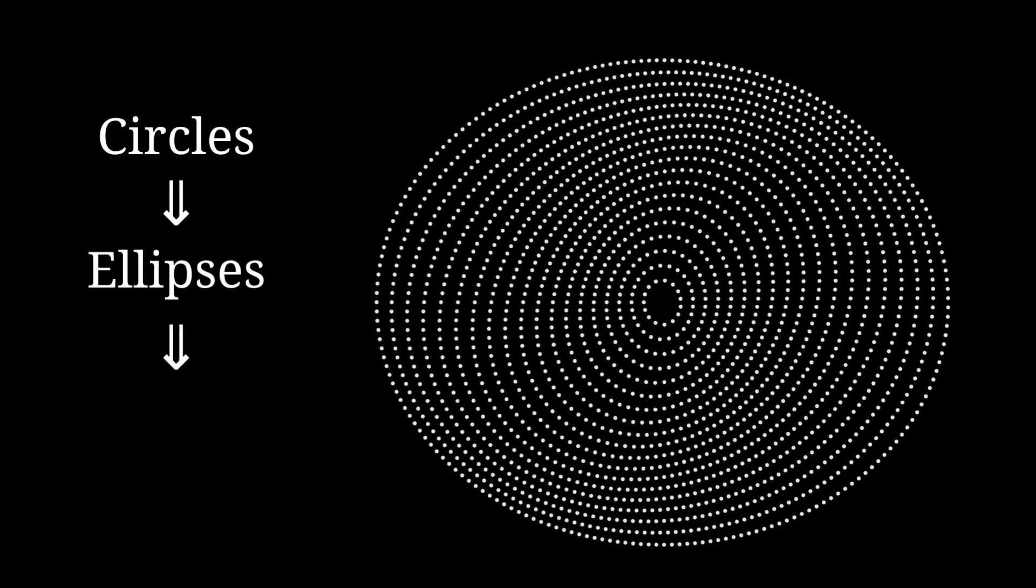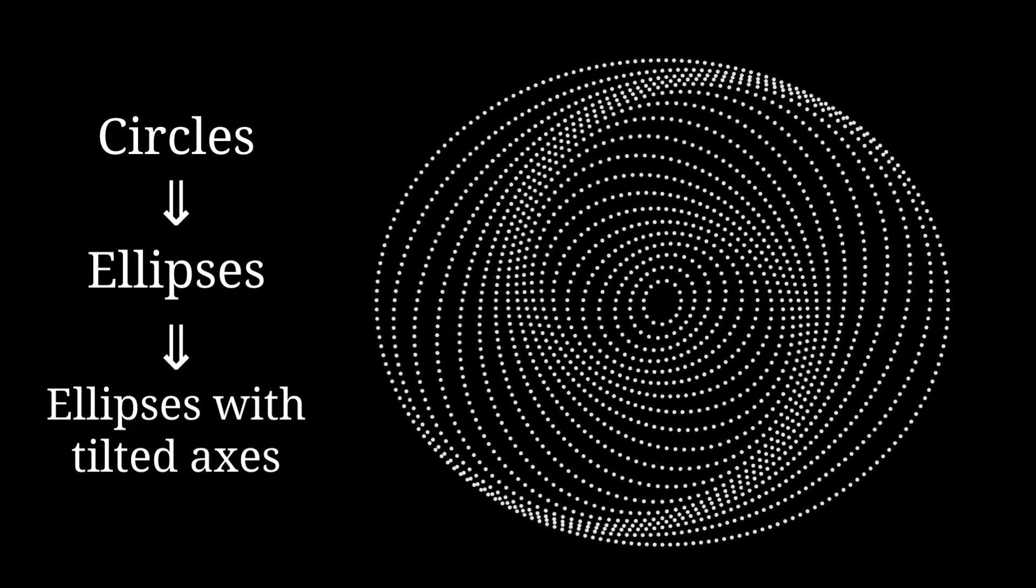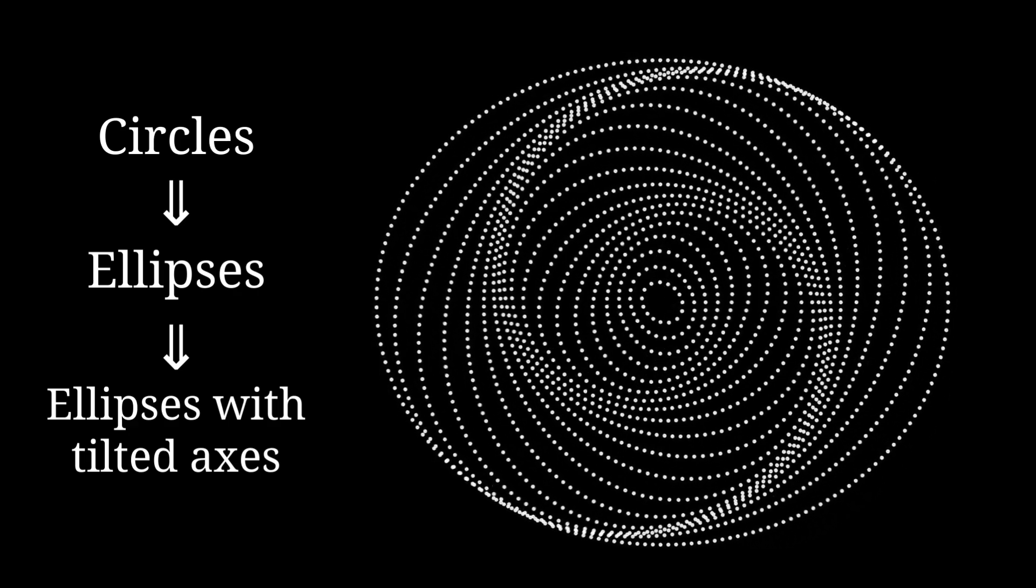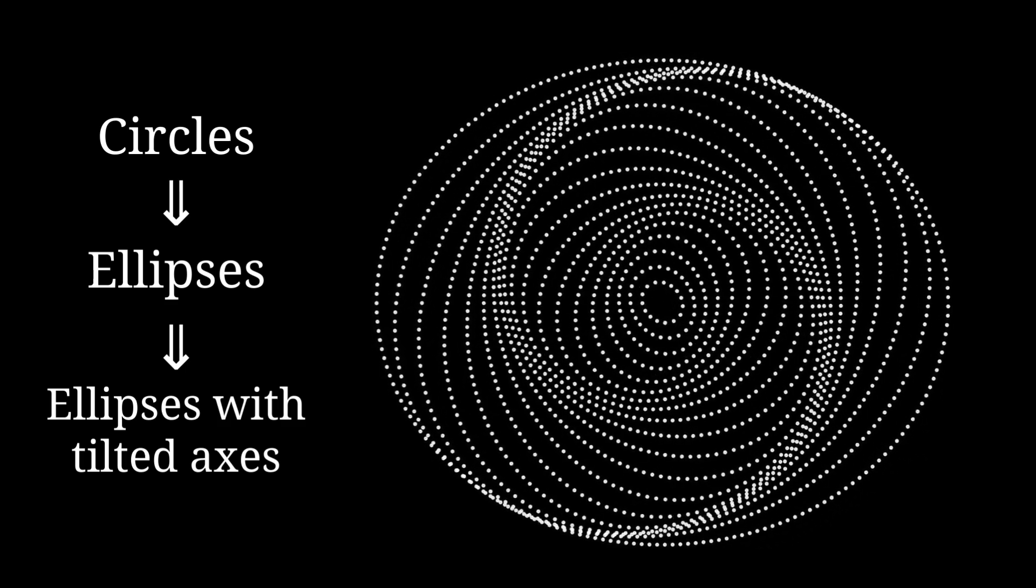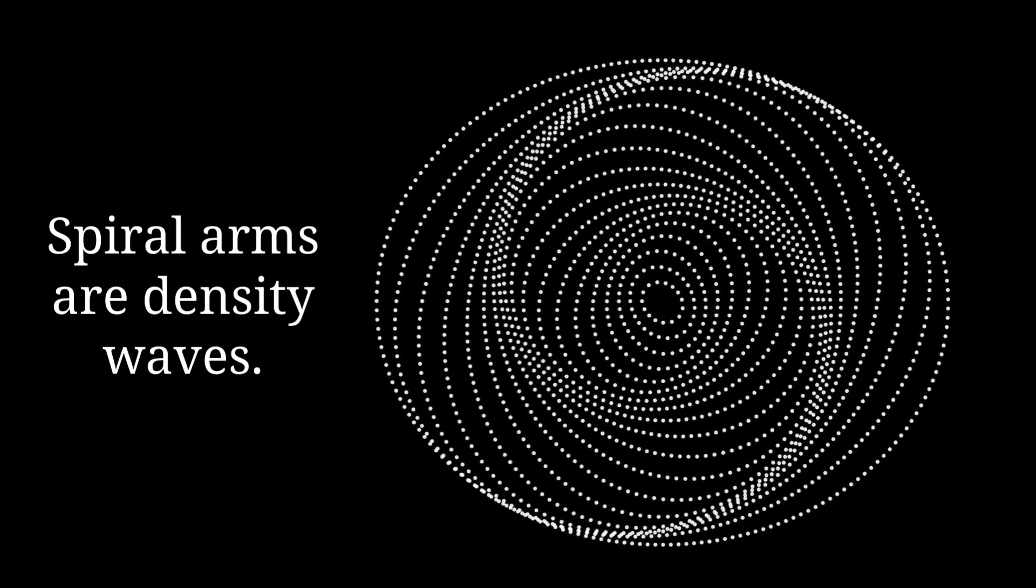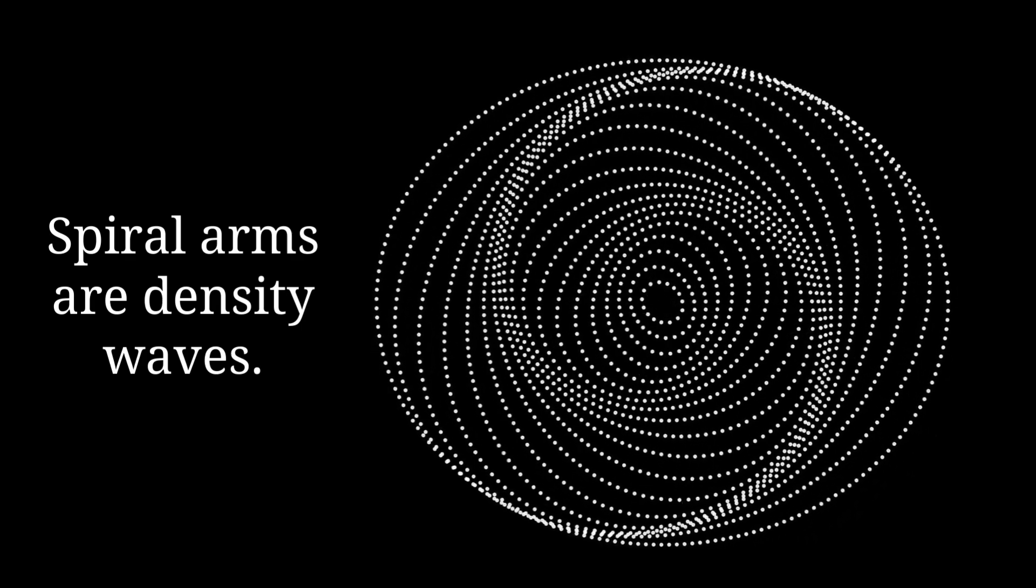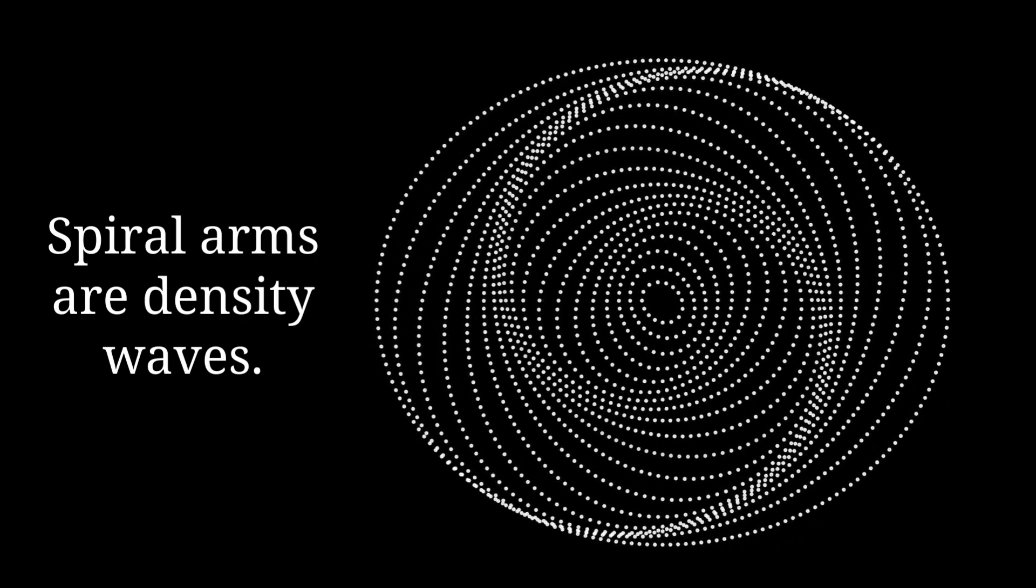In the density wave theory, the arms are not fixed solid objects but instead made up of areas of greater density. Individual stars within a galaxy do not physically move along the arms.